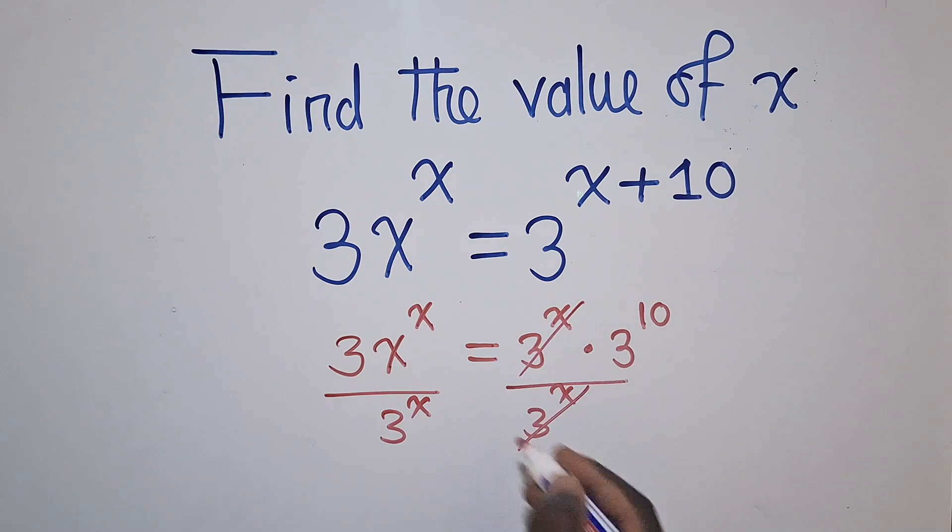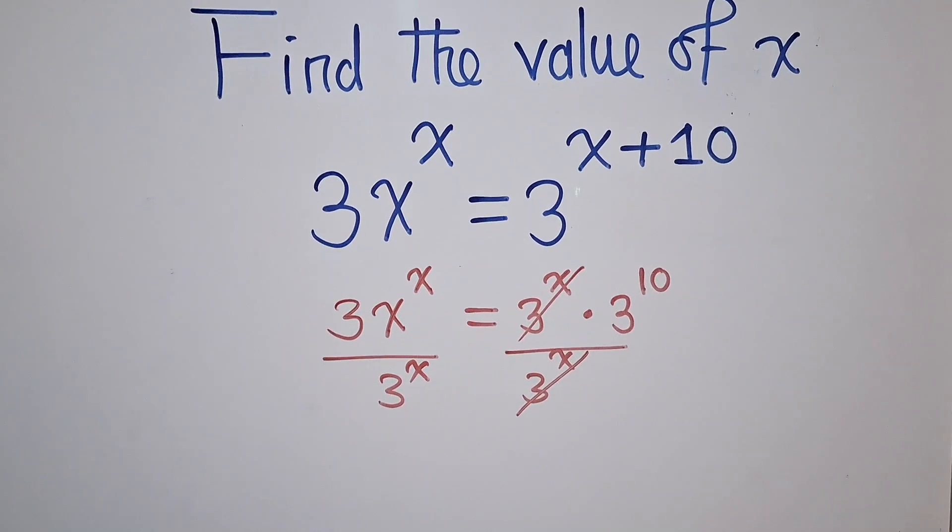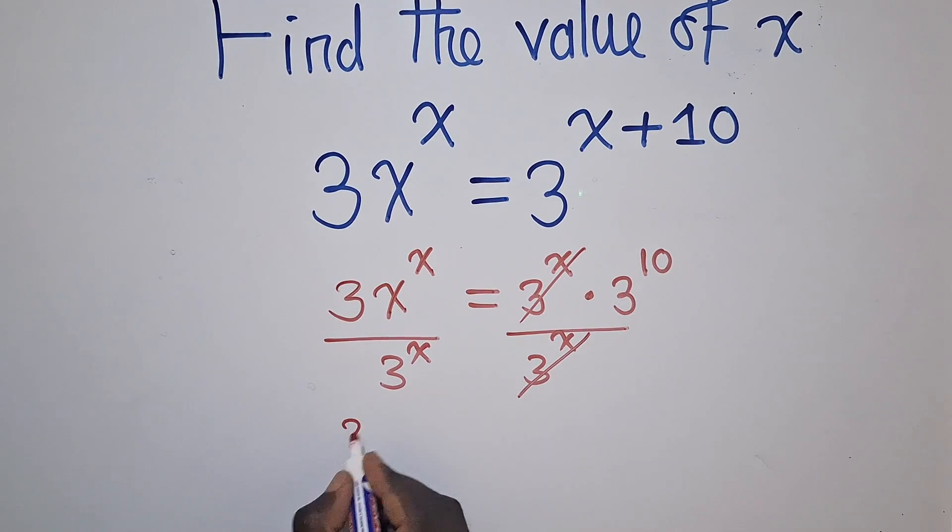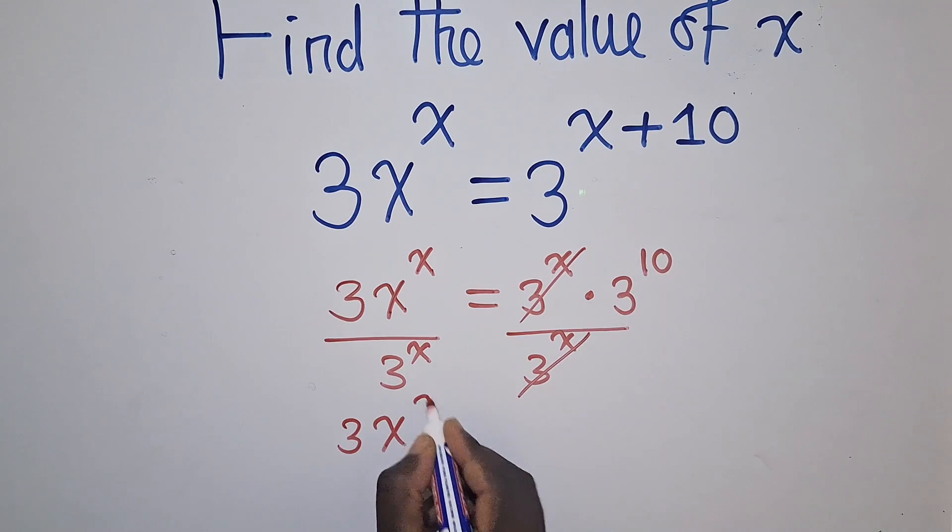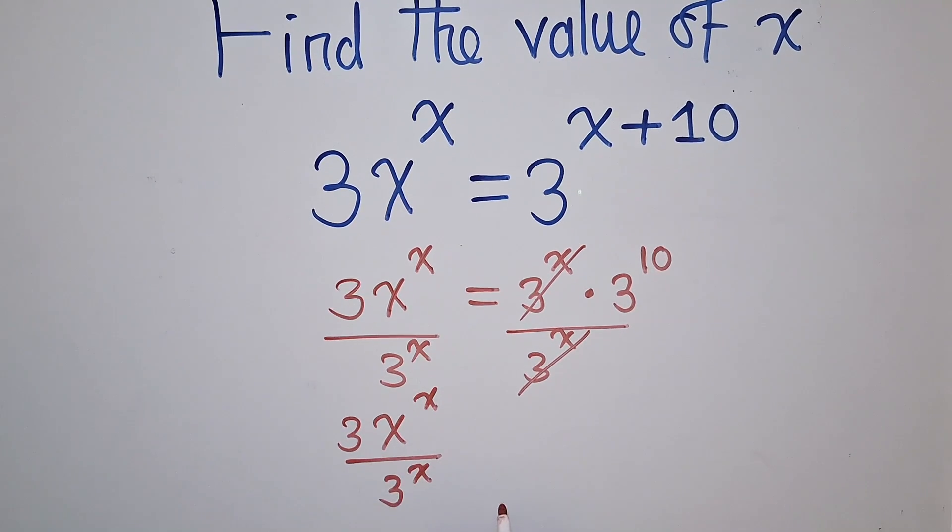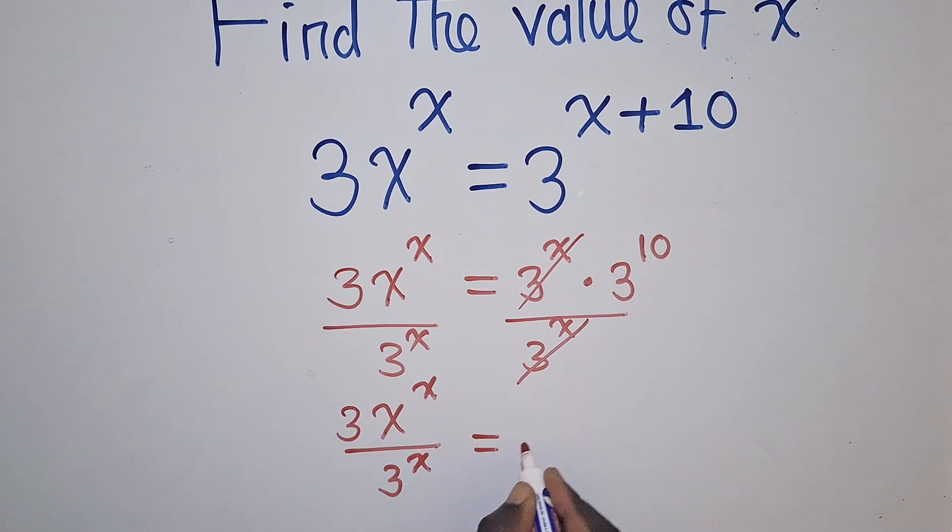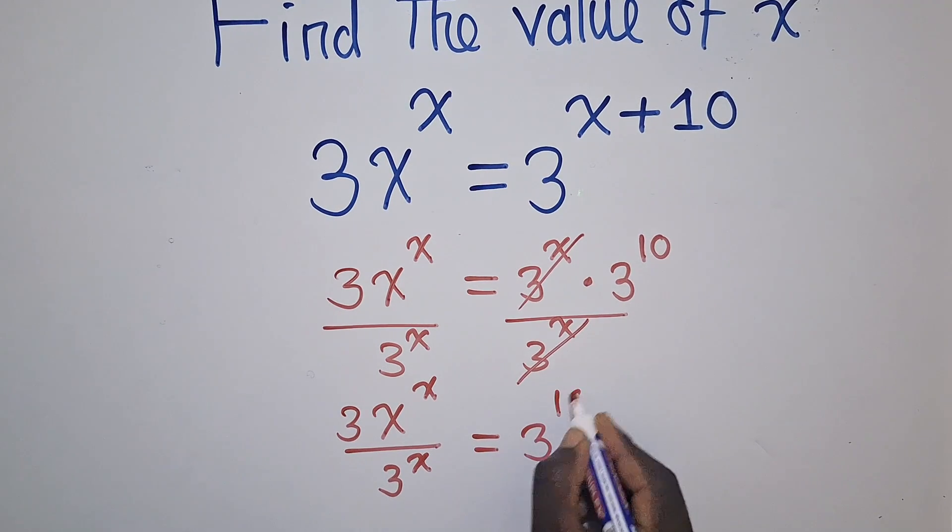So you can see this and this will cancel. We shall, of course, remain with a 3X power X over a 3 power X is equal to a 3 power 10.